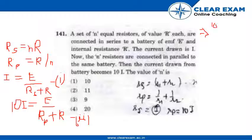10 is equals to (n plus 1) times r in bracket, divided by (1 by n) plus 1, divided by r.